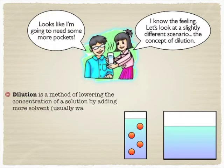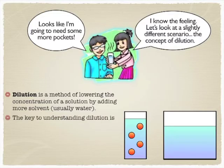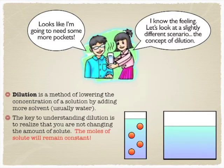And so really what dilution is is simply a way of lowering the concentration of something by adding more of the solvent, and we're typically talking about water in this case. And the key to understanding dilution is that you're not changing the number of moles. All you're doing is you're putting those moles into a bigger volume of solvent.